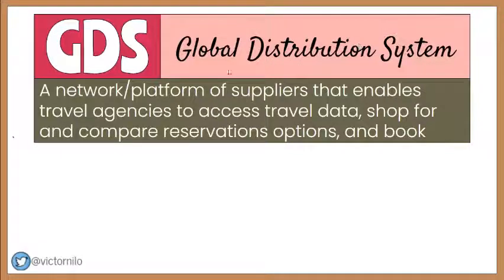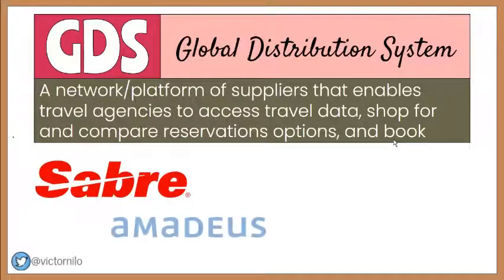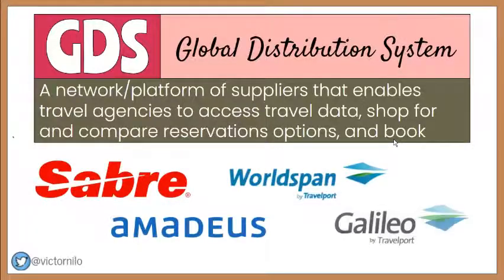In short, the GDS is a network of suppliers that enables travel agencies and their clients to have real-time access to travel data, shop for and compare reservation options, and book travel. The leading global distribution companies are Sabre, Amadeus, and Travelport, which owns WorldSpan and Galileo.